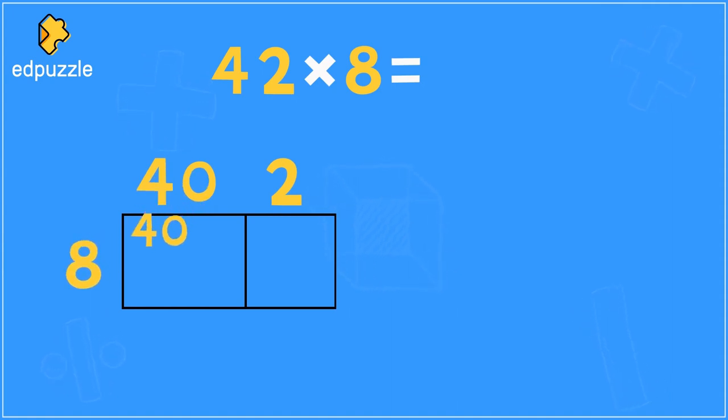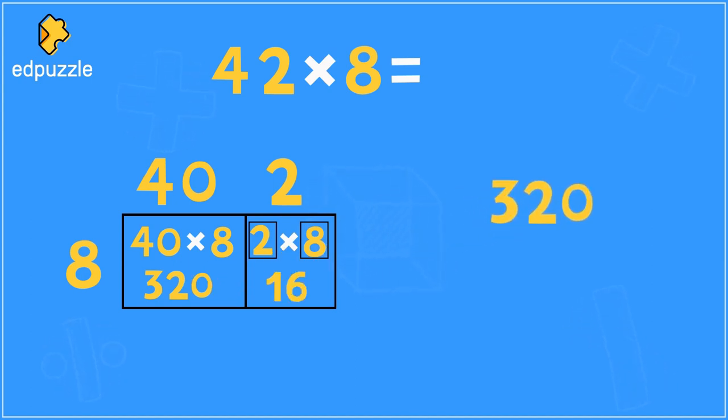In the first box, you multiply 40 times 8 by solving 4 times 8, which is 32, and then adding a 0 to get that 40 times 8 is 320. In your next box, you multiply 2 times 8, which you know is a multiplication fact, is 16. Now you add 320 plus 16. Well, 0 plus 6 is 6. 2 plus 1 is 3, and 3 plus nothing is 3. So 42 times 8 is 336.